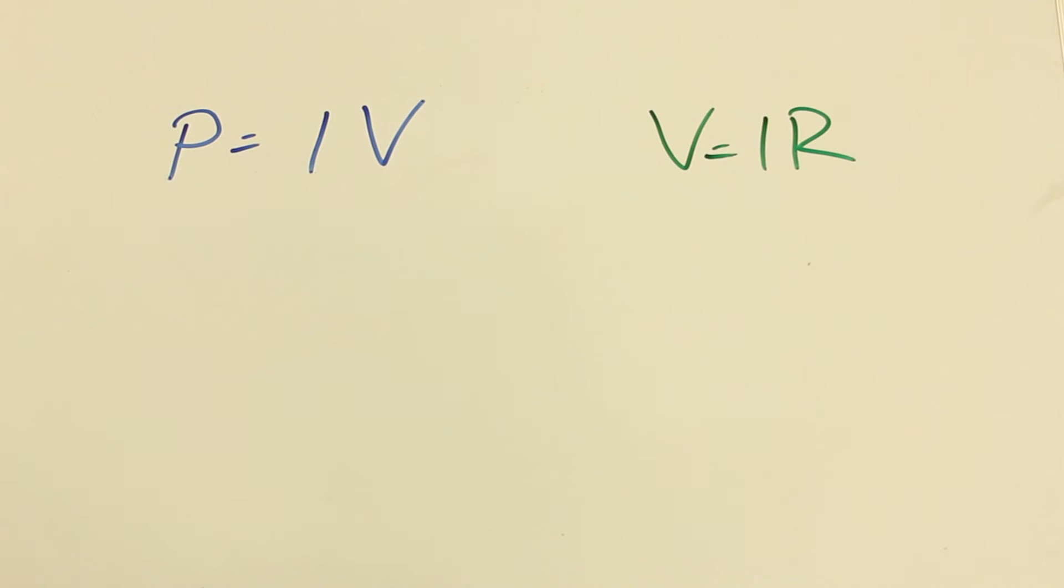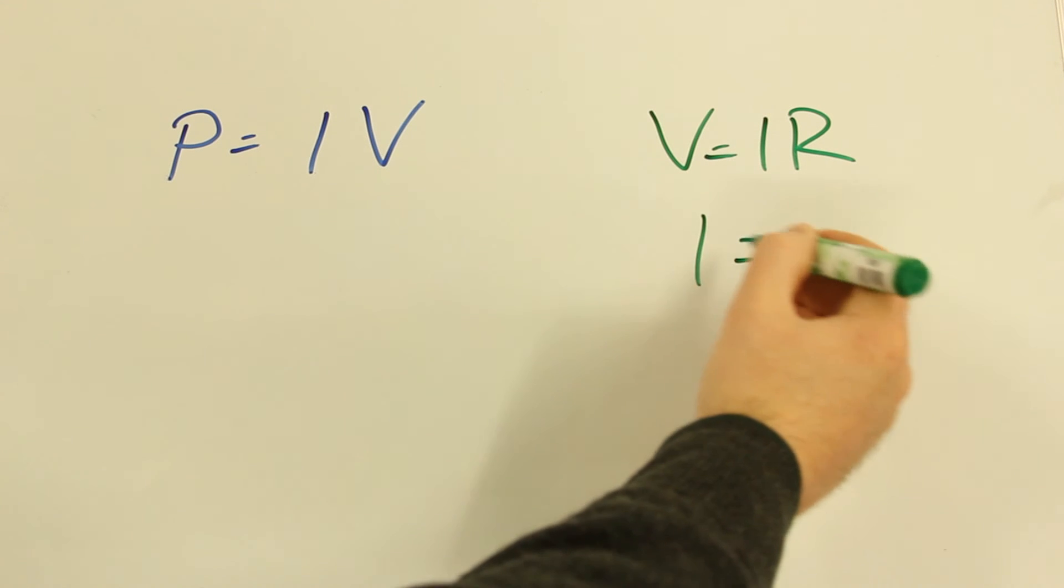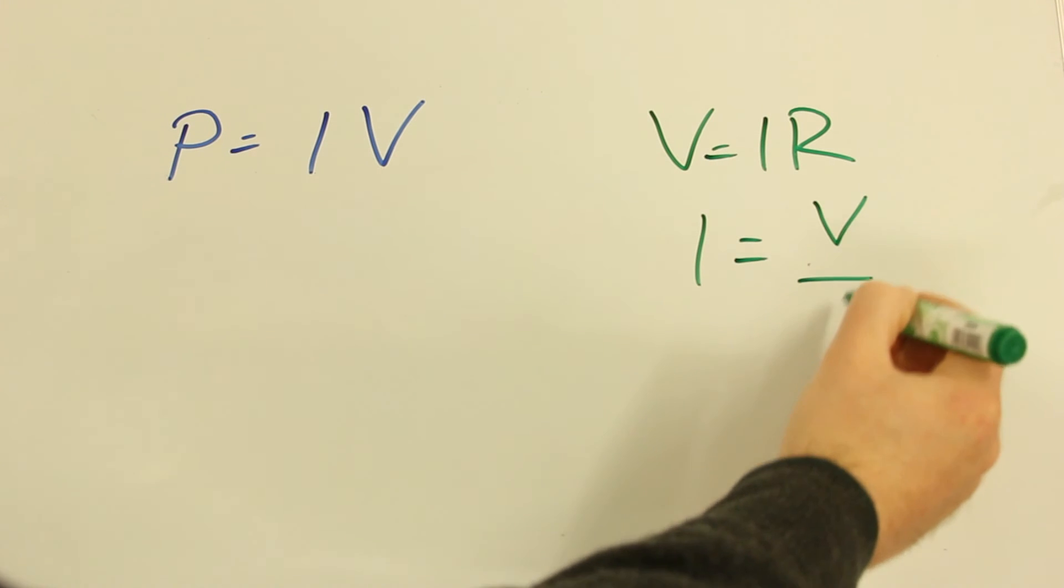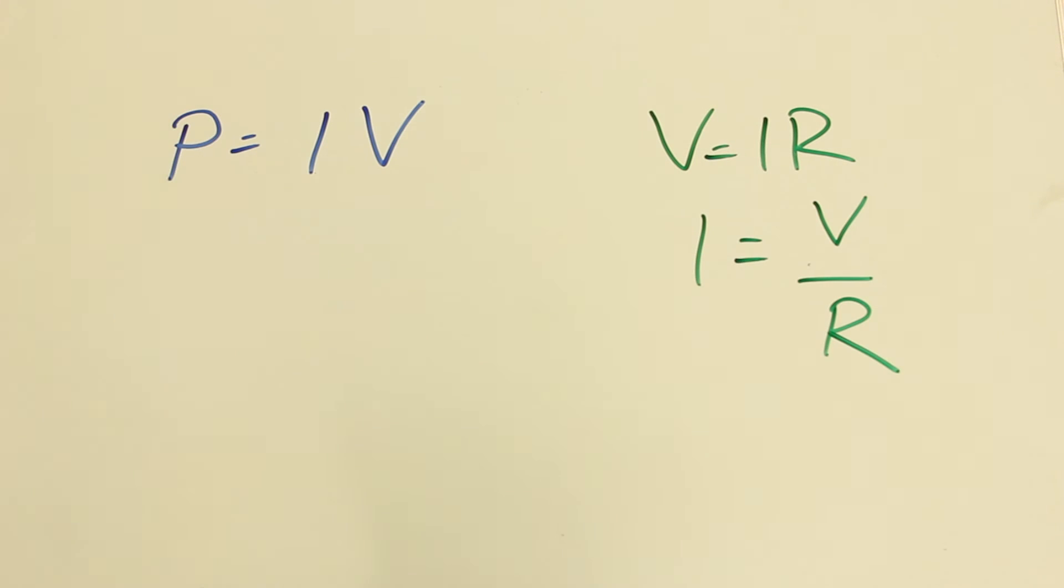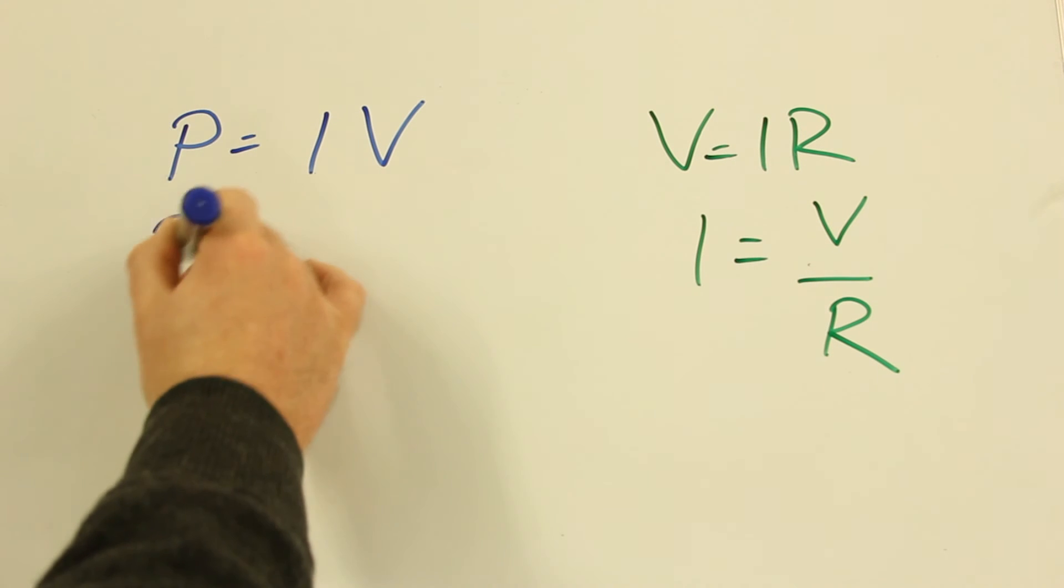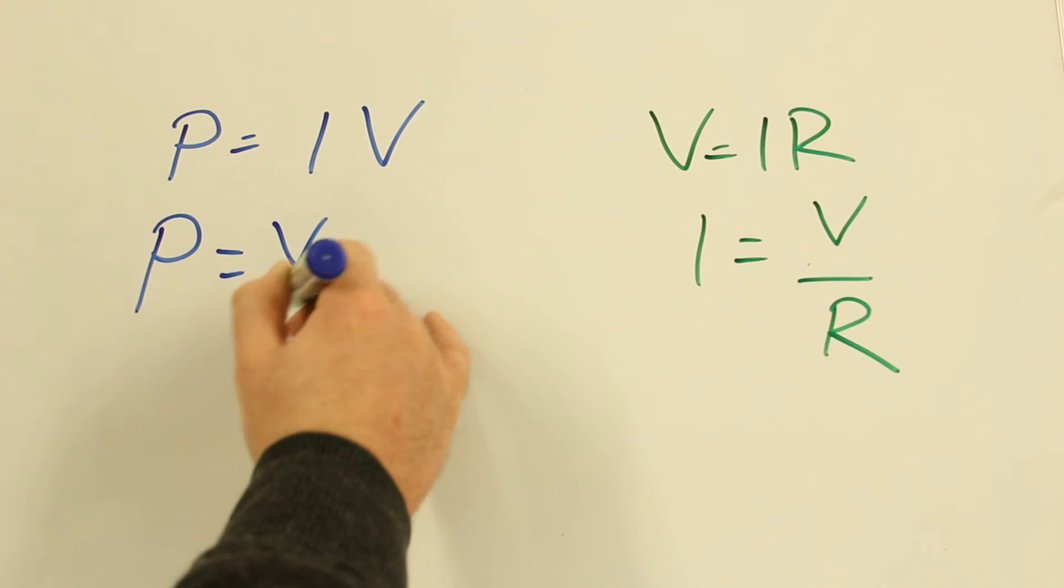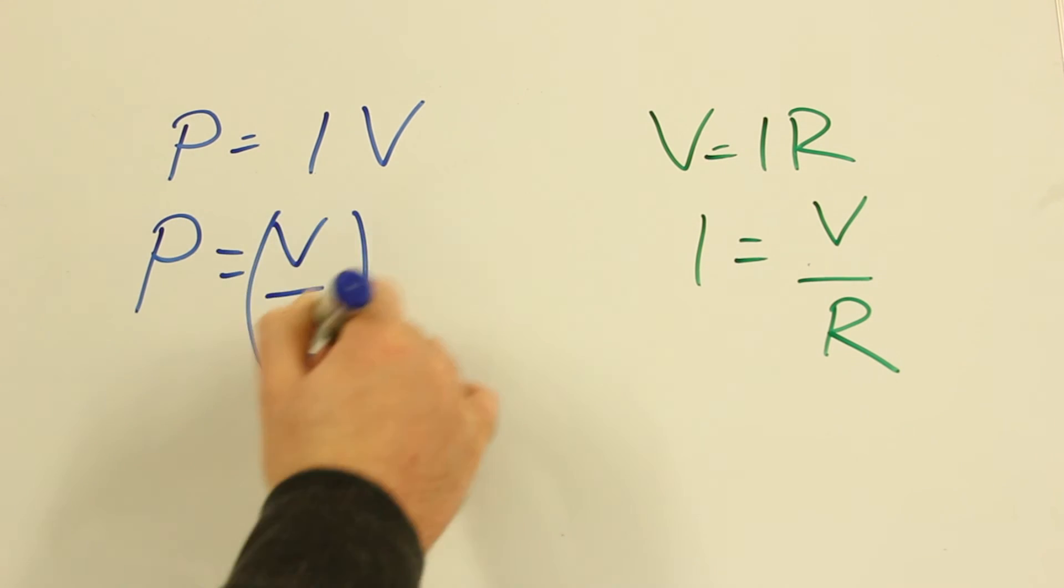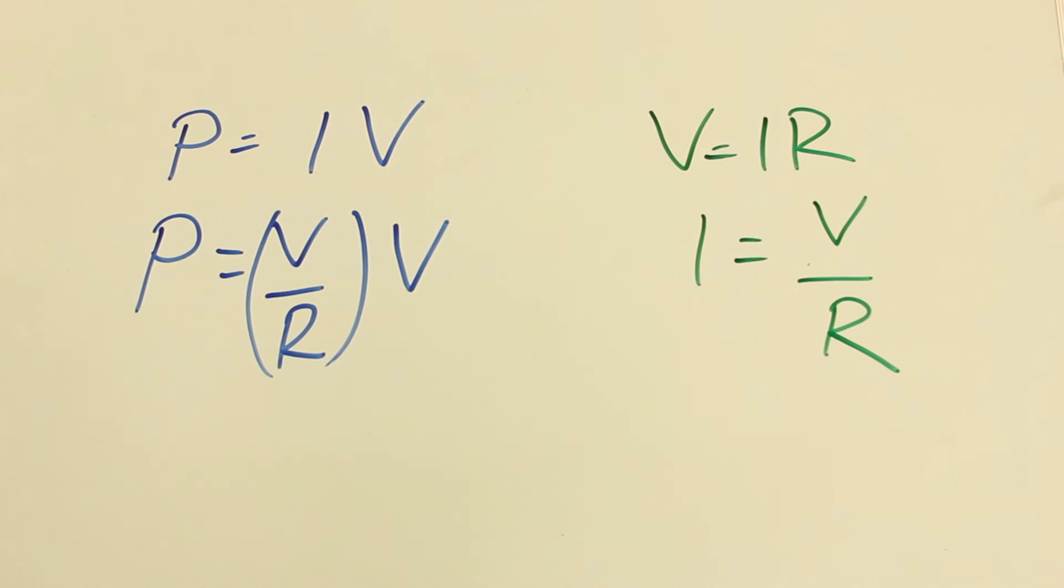For the next bit of this derivation, I just need to rearrange my Ohm's law into I equals V over R. And then I can input that instead of I. Expand that bracket and I get P is V squared over R.